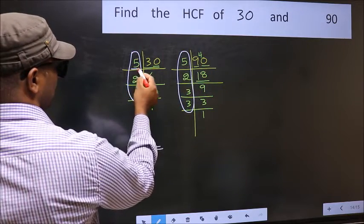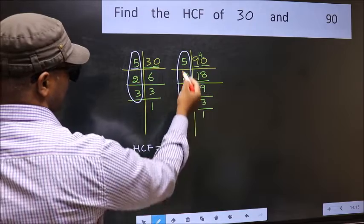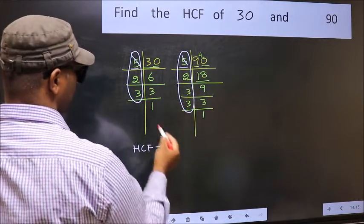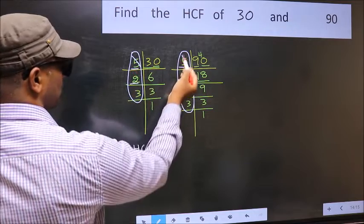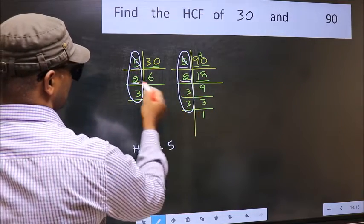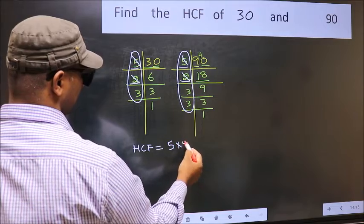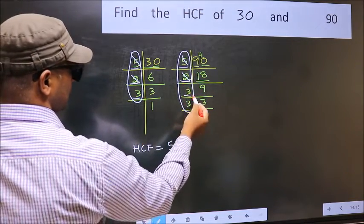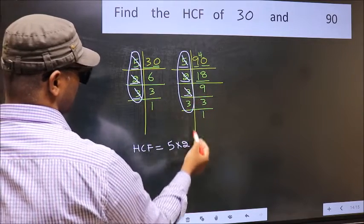Starting with the number 5. Do we have 5 here? Yes. So cut 5 right here. Next number 2. Do we have 2 here? Yes. So cut 2 right here. Next number 3. Do we have 3 here? Yes. So cut 3 right here.